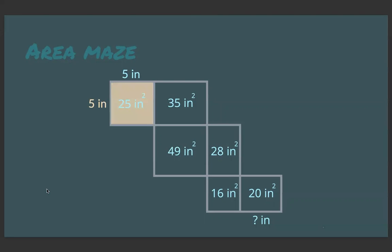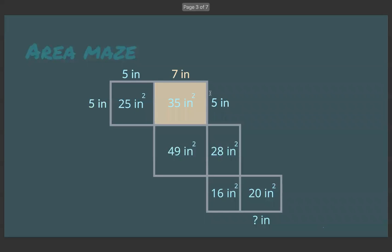So if we know that the up and down length is 5, it's also going to be 5 over here on this rectangle, and 5 goes into 35 7 times. So 7 is this length right here, or width.